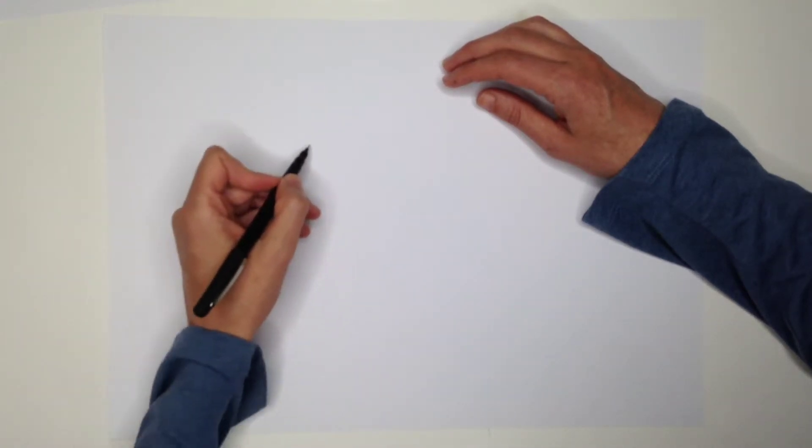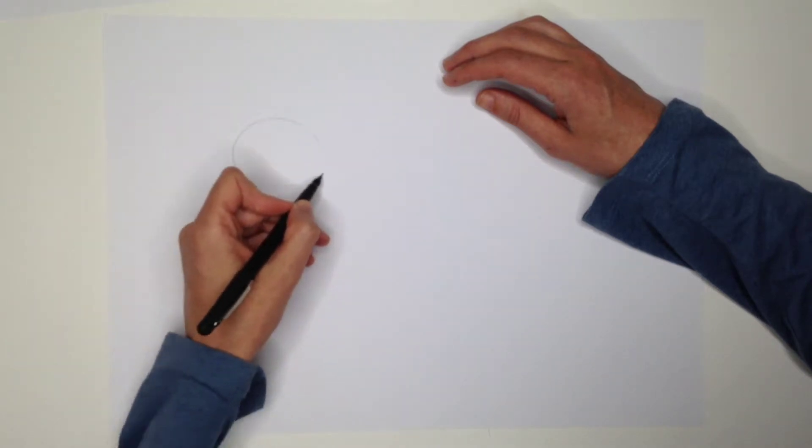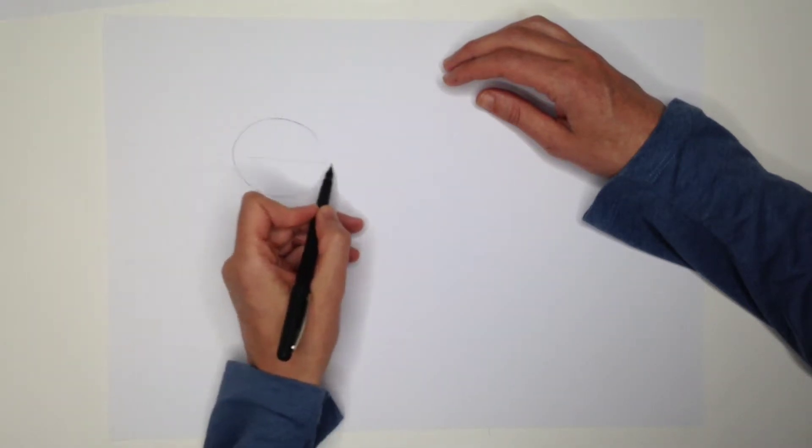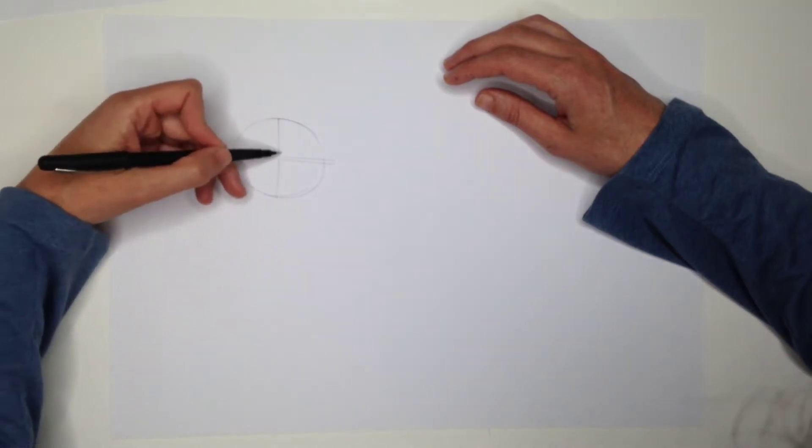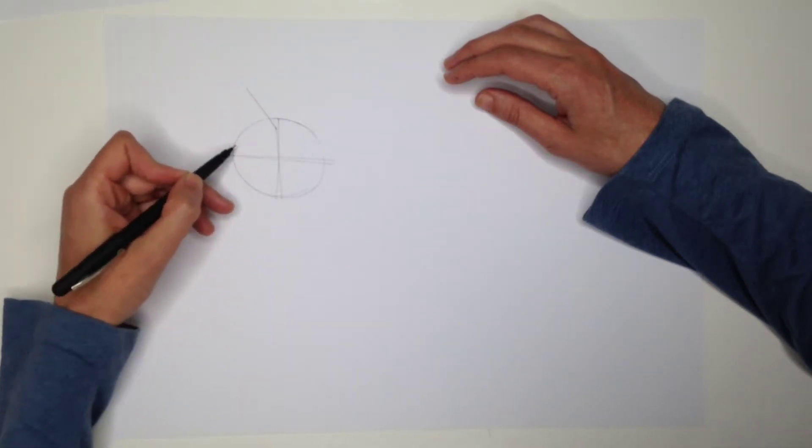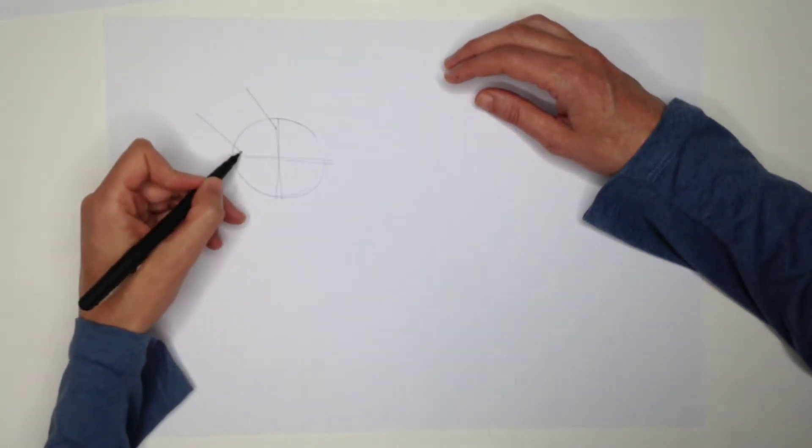So basically what we have, if I draw a circle and I divide it this way, then we've got obviously these two lines are the same length.